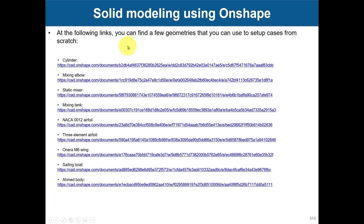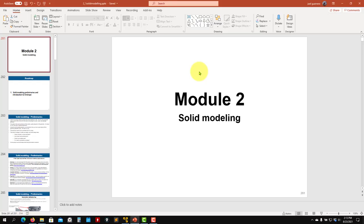So we're going to work in this training with a cylinder, a mixing elbow, a static mixer, and also the Ahmed body. If you click on any of these, you will open the document and then you need to clone it in your account, because you don't have access to modify this document. That's all for this video. See you in the next one where we are going to start using OnShape. Thank you. Bye.